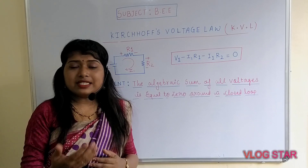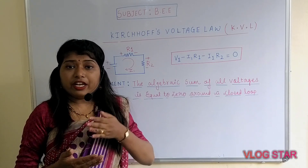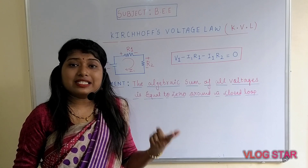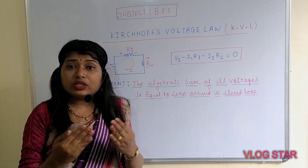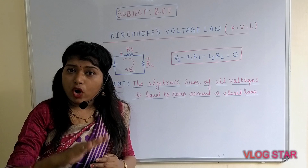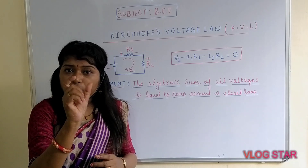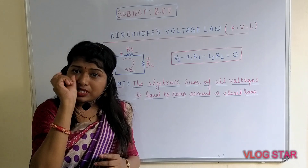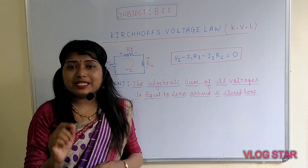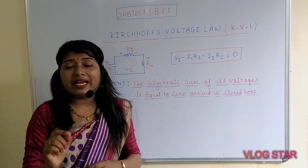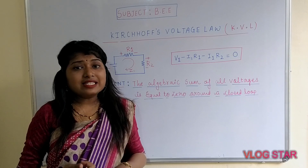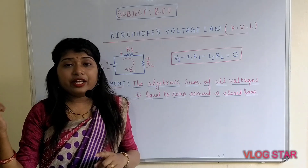The third sign convention says that if the direction of the current and the polarity assigned to the resistor are both in the same direction, there will be a fall in potential and the voltage drop across that particular resistor is given by V = −i × R.